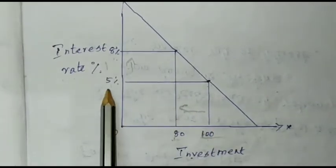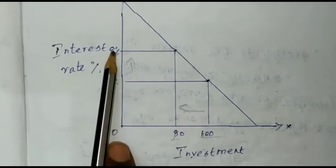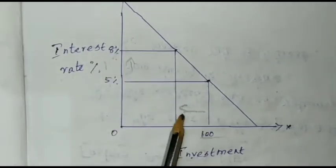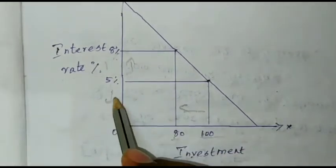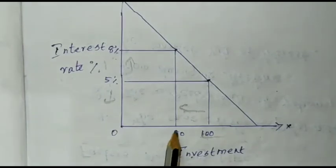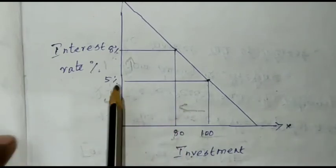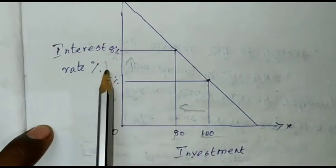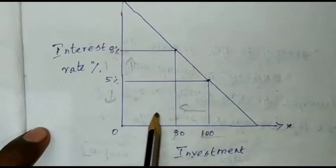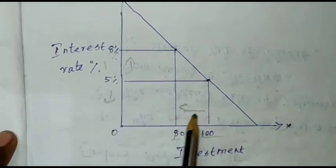You will be able to increase the interest from 5% to 8%. If you have less money, maybe you will pay more. It's only 80%. When you have the interest rate at a few points, it will lead to more of an interest rate impact.